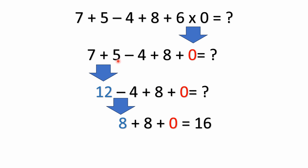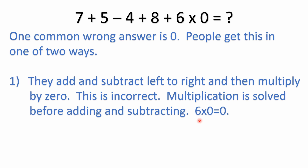7 plus 5 is 12. Then we have 12 minus 4 plus 8 plus 0. 12 minus 4 is 8, and 8 plus 8 plus 0 is 16. So the correct answer is 16.